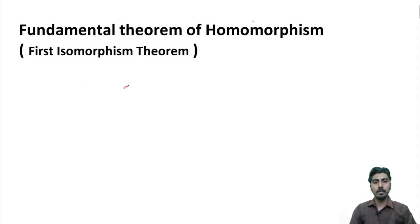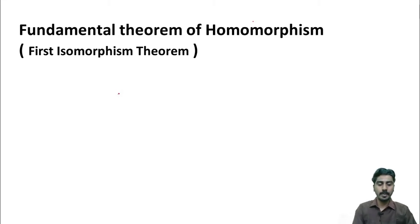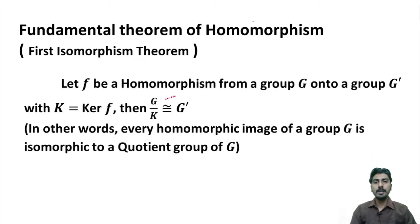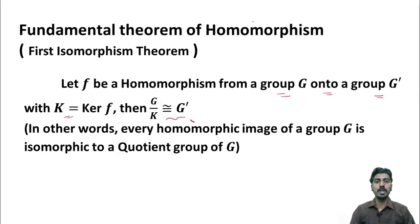Fundamental theorem of homomorphism, or first isomorphism theorem. Let me define the theorem. Let f be a homomorphism from a group G onto a group K dash. If the kernel of f is equal to K, then the quotient group G by K is isomorphic to K dash. In other words, every homomorphic image of a group G is isomorphic to a quotient group of G.